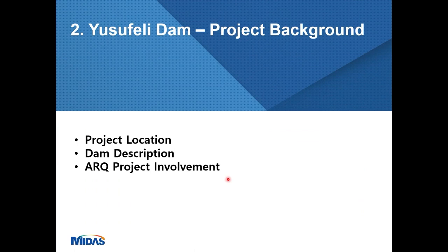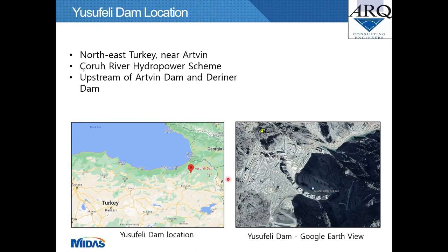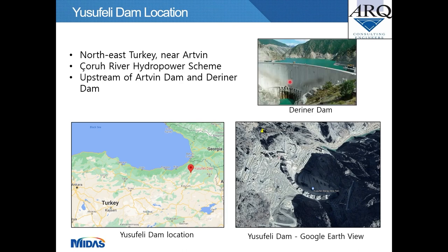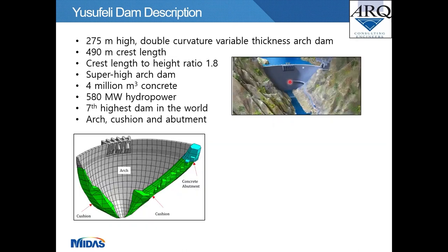The Eucefli Dam project is located in the northeast region of Turkey near the city of Artvin. The dam forms part of the Koru River hydropower scheme implemented by the DSI, and is situated upstream of two other notable dams: the Artvin and Derina dams. Images show a Google Maps view of the dam location and a Google Earth photograph of the dam under construction.